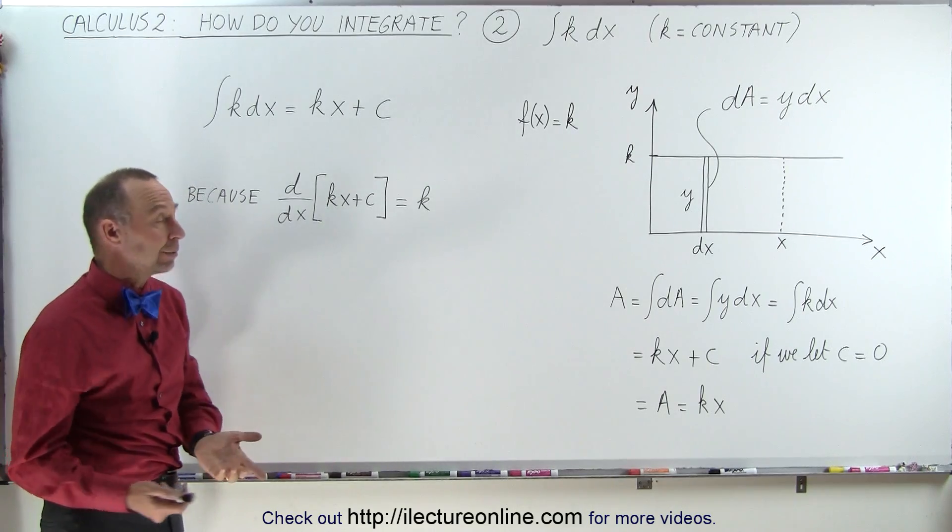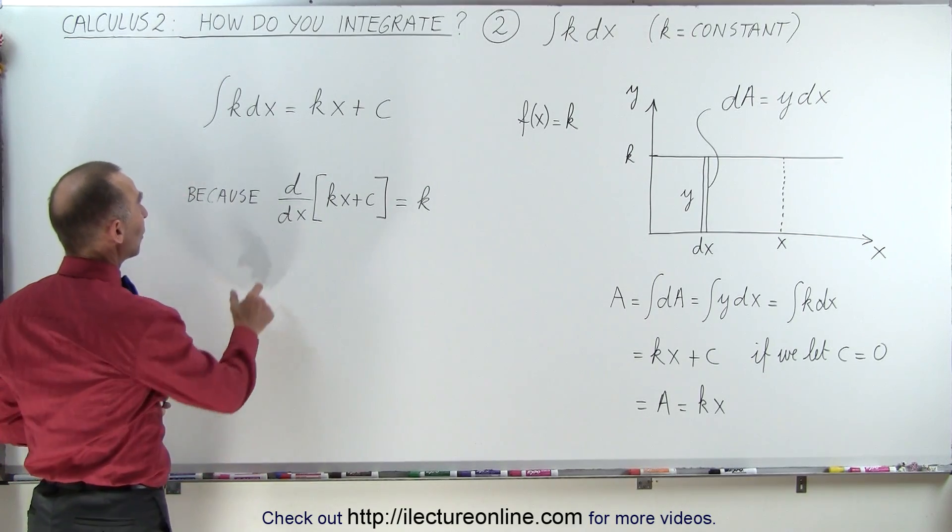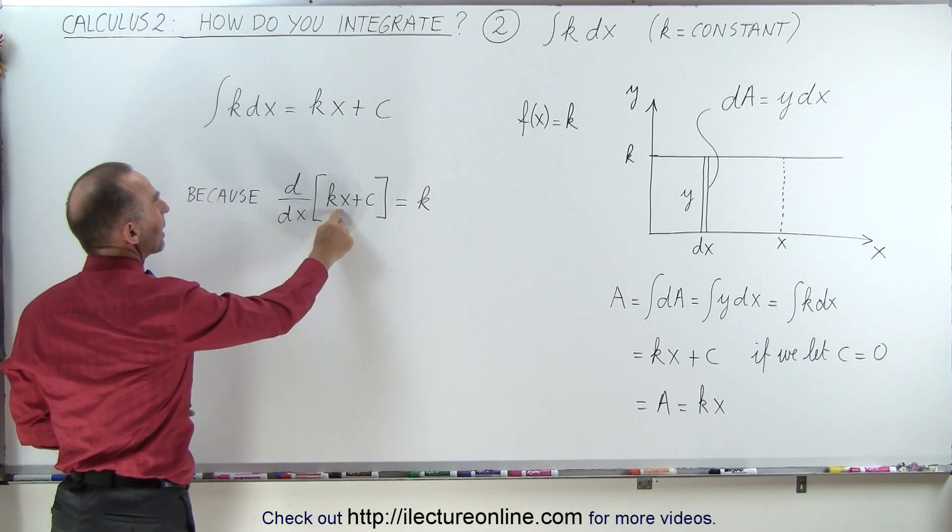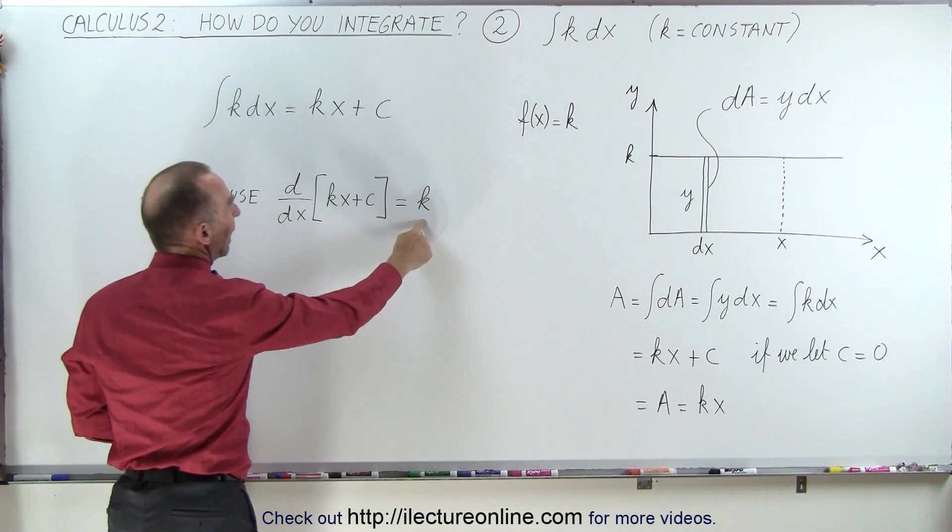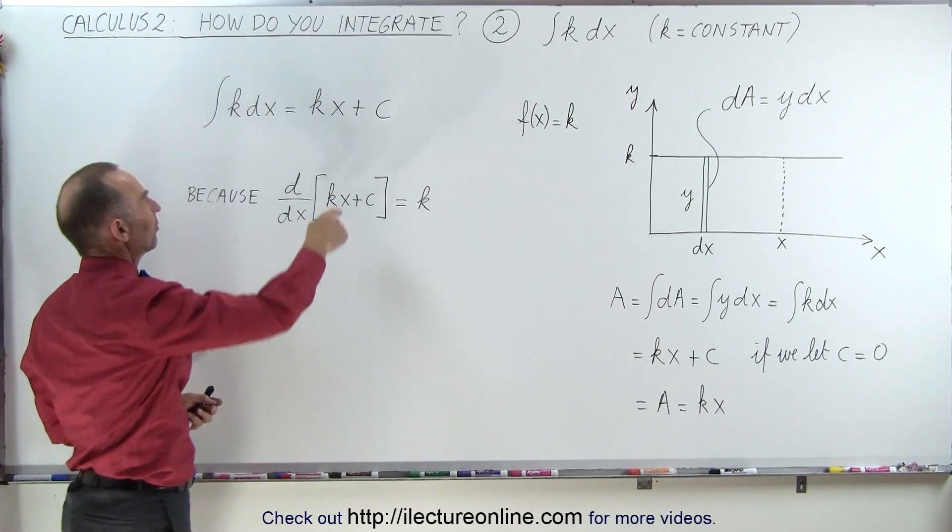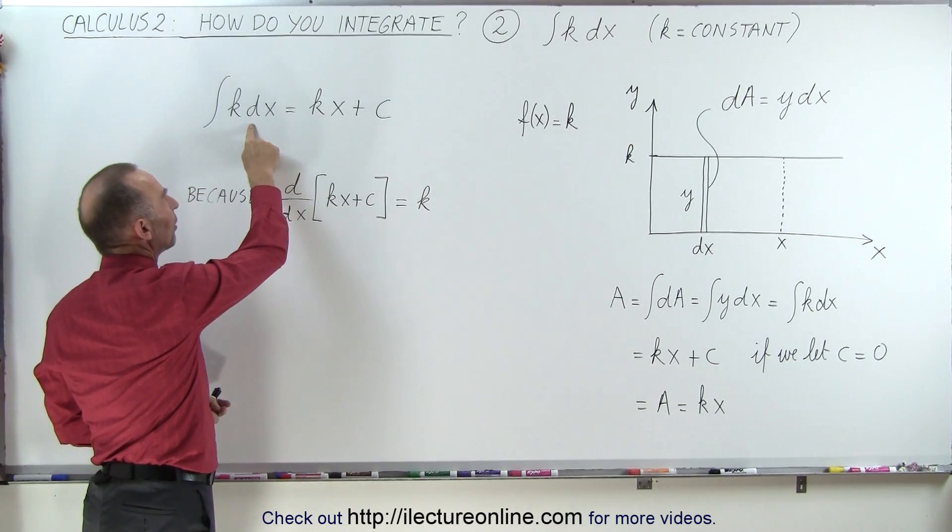How do we know that? Well, we can work backwards. We can take the derivative with respect to x of that result, kx plus c, and we get back the original constant we started from. So this is really the anti-derivative of k dx.